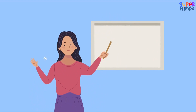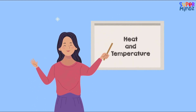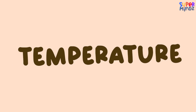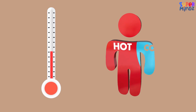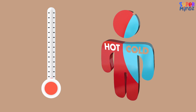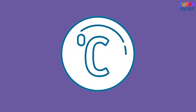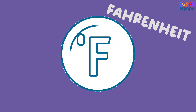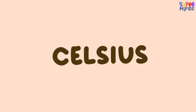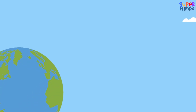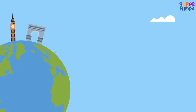Hi kids! Today let's learn about heat and temperature. Temperature is how we measure how hot or cold something is. We use a scale called Celsius or Fahrenheit to measure temperature.